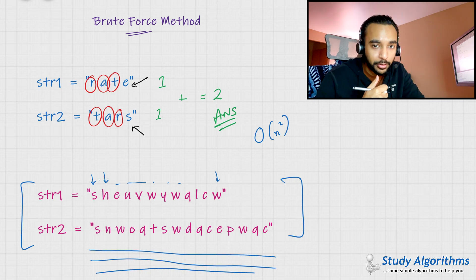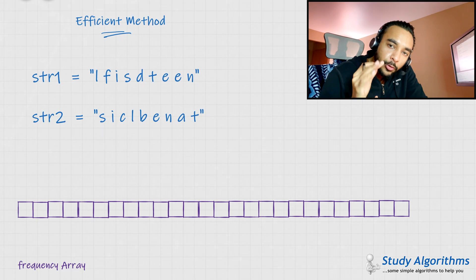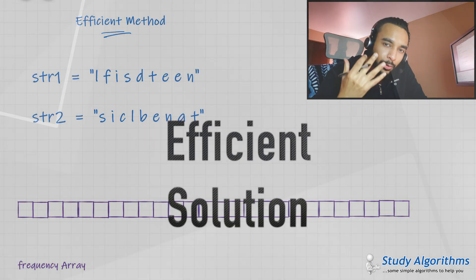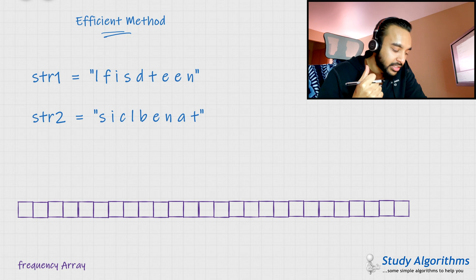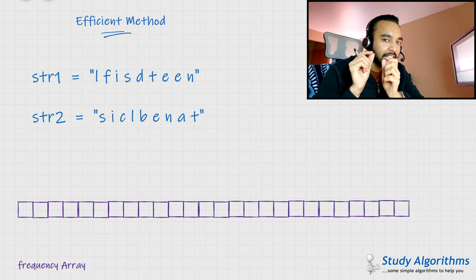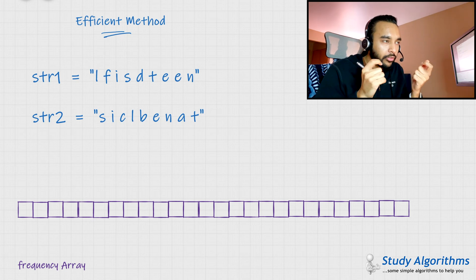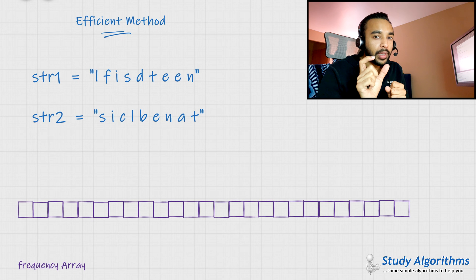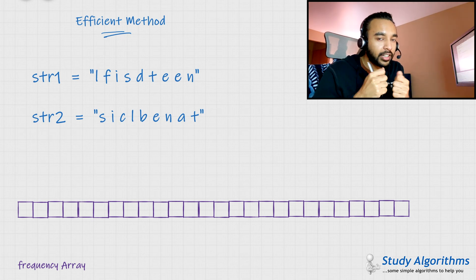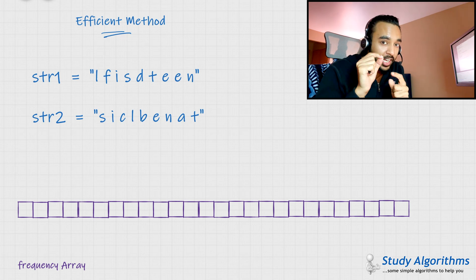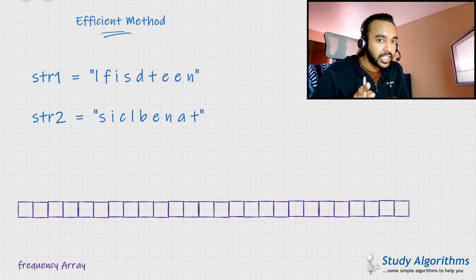Now let us see an efficient solution to this problem. To find an efficient solution, you need to capture some hints from the problem itself. You know that anagrams have the exact same number of characters, and the English alphabet has a total of 26 characters. So if you can somehow map the frequency of the characters in the first string and compare it with the frequency of the characters in the second string, that should give you a hint. Because if a character is present in the first string, it has to be present in the second string, and its frequency should also be the same.